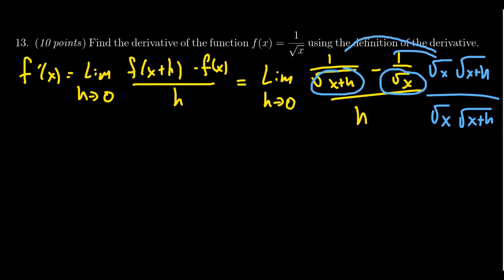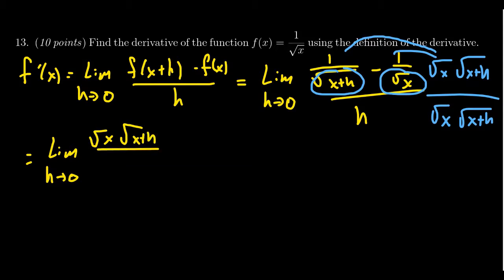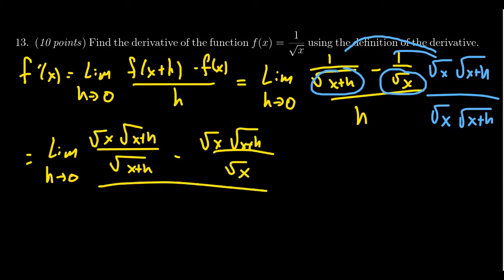In the numerator, you would distribute these things through, in which case we then get the limit as h approaches zero. You're going to get the square root of x times the square root of x plus h all over the square root of x plus h, minus the square root of x times the square root of x plus h over the square root of x. In the denominator, we now get h times the square root of x times the square root of x plus h. Do not multiply out the denominator — it will not be to your benefit.